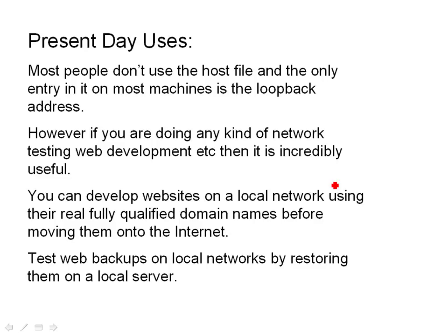So for present-day uses, it's not really used by normal people anymore. If you go to most machines, you'll see the default entry which is the simple loopback address, and that's all there is. If you're into web development or networking, then it's incredibly useful. You can configure it to point to a website on your local network — a copy of a site that's on the internet — so you can develop websites locally and then put them out onto the internet without changing anything because the domain name stays the same. You do have to be careful that you're editing the right website. You can also use it for test backups: restore a website onto a local backup and test it locally. Very useful if you're a networking person or a web developer.